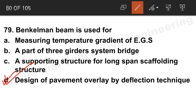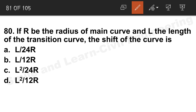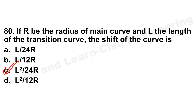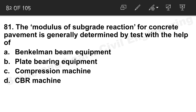Question 79: Benkelman beam is used for design of pavement overlay by the deflection technique. Option D is the correct answer. Question 80: If R is the radius of the main curve and L the length of the transition curve, the shift of the curve formula is L²/24R.